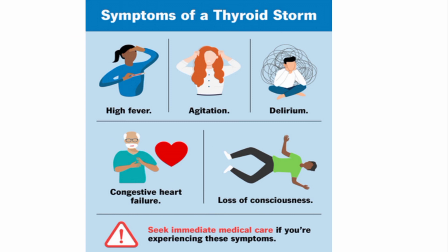Thyroid storm or thyroid crisis is a very dangerous condition that sometimes develops in a hyperthyroid patient and if not treated can be fatal within 48 hours. The most common causes include infection, pulmonary or cardiovascular disorders, trauma, burns, fits, thyroid surgery, obstetric complications, and even emotional distress. Symptoms are caused by the increased action of thyroxine and T3, and include high fever, agitation, delirium, congestive cardiac failure, and even loss of consciousness. Immediate treatment should be started.